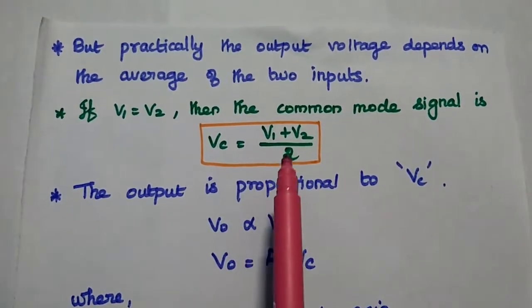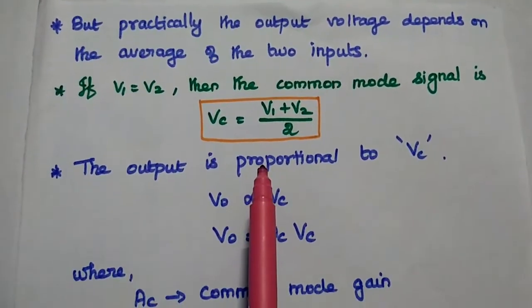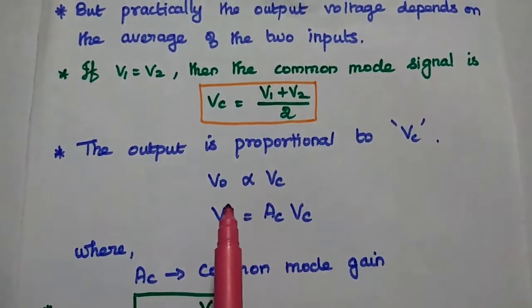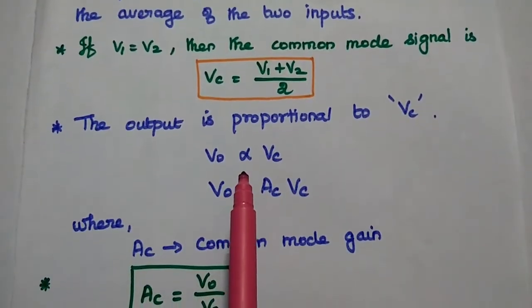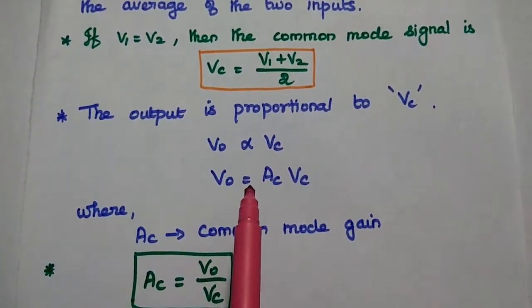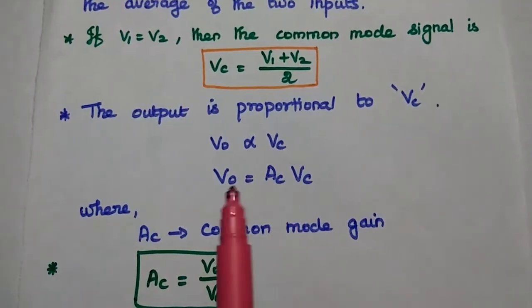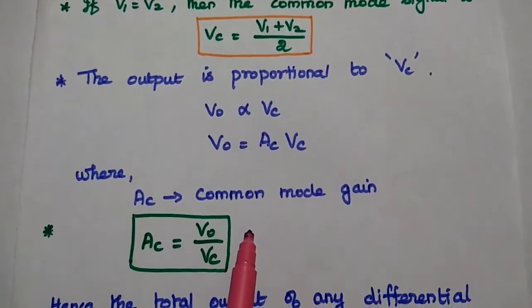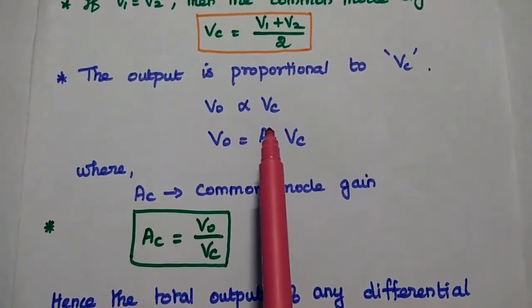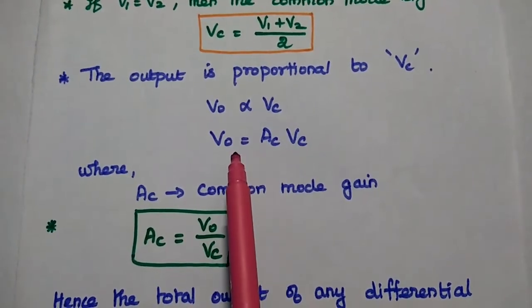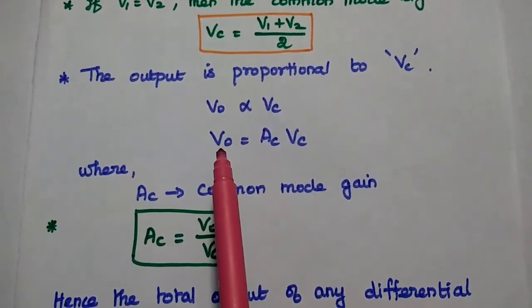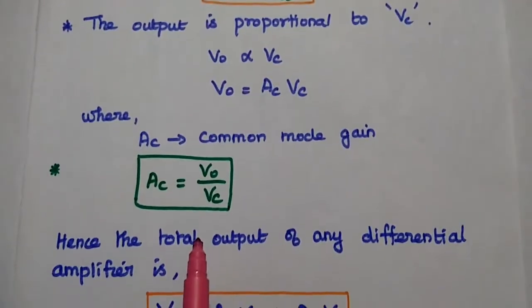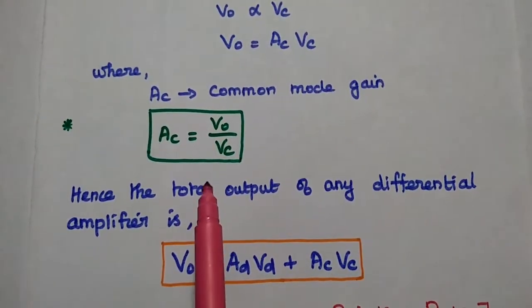When V1 is equal to V2, the common mode signal can be obtained using the average formula: Vc is equal to (V1 plus V2) divided by 2. Then the output is directly proportional to this common mode voltage. So, V0 is equal to AC into Vc, where AC is the common mode gain. From this, the common mode gain AC is equal to the ratio of output voltage to the common mode voltage.